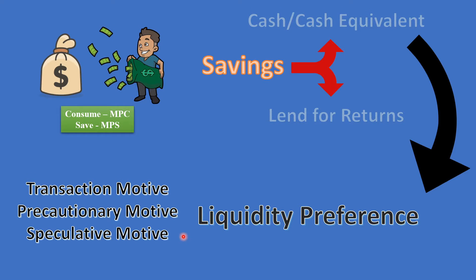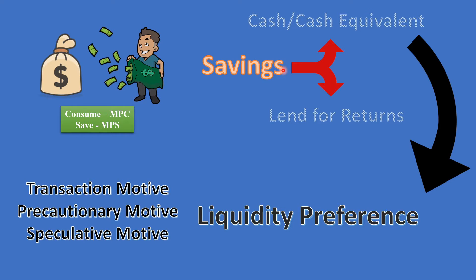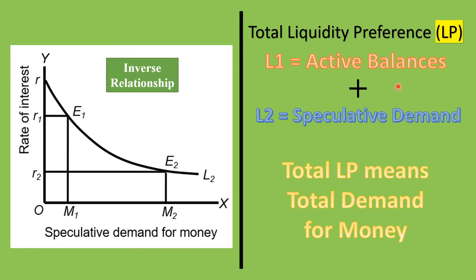To summarize, Keynes identified three motives for holding money. L1 denotes the active balance — the liquidity held for transaction motive and precautionary motive. L2 denotes the speculative demand for money. The total liquidity preference is L1 plus L2, which gives us the total demand for money.